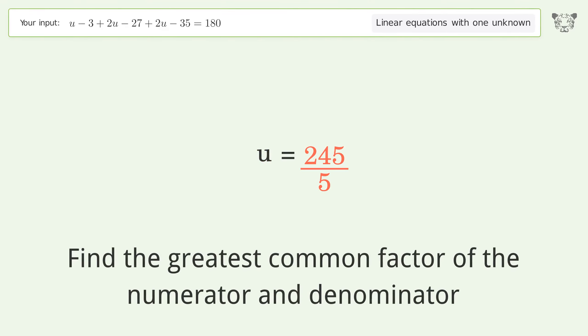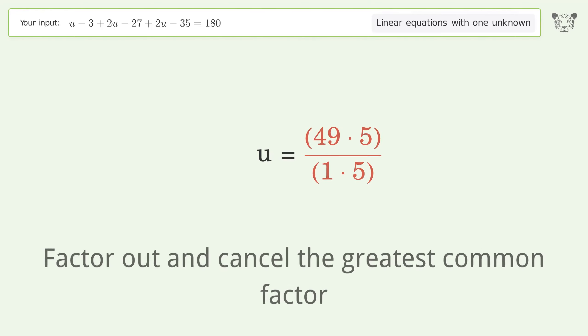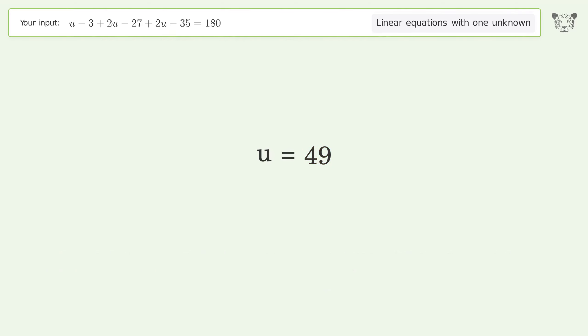Find the greatest common factor of the numerator and denominator. Factor out and cancel the greatest common factor. And so the final result is u equals 49.